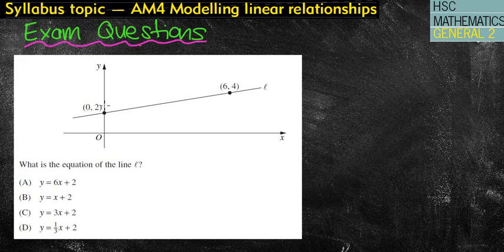The first one here says, what is the equation of line L? So a couple of ways we could do this. Certainly if we're looking at the rise over the run formula, we could simply draw our triangle in using the two points that they've provided us.